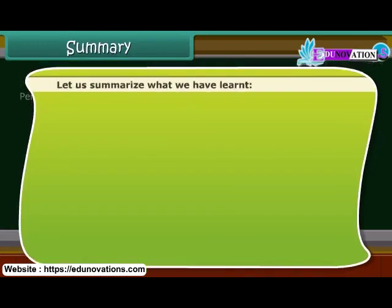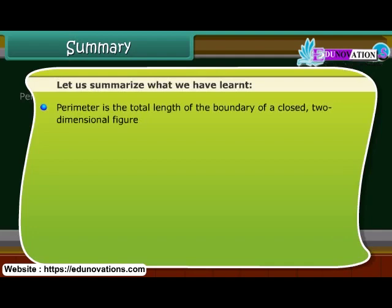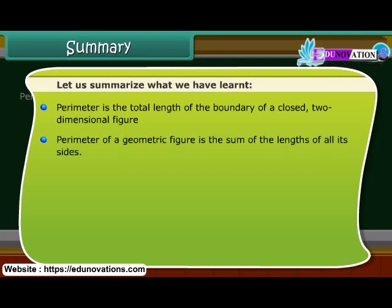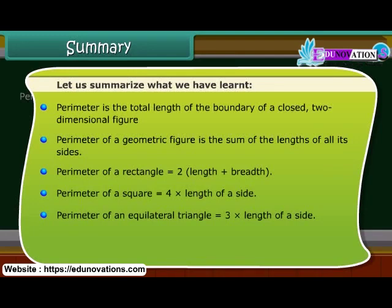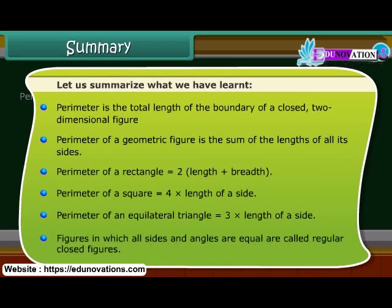Let us summarize what we have learned. Perimeter is the total length of the boundary of a closed two-dimensional figure. The perimeter of a geometric figure is the sum of the lengths of all its sides. The perimeter of a rectangle is 2 into (length plus breadth). The perimeter of a square is 4 into the length of a side. The perimeter of an equilateral triangle is 3 into the length of a side. Figures in which all sides and angles are equal are called regular closed figures.